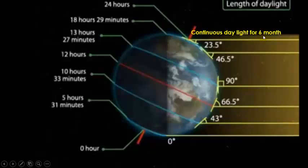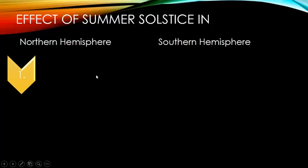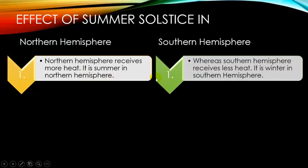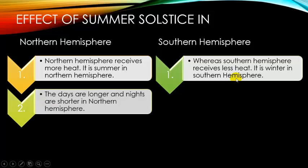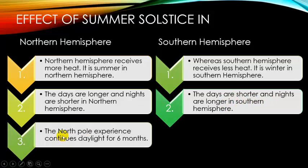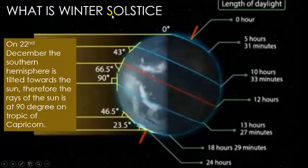Effects of summer solstice: The North Pole experiences continuous daylight for 6 months, while the South Pole experiences continuous night for 6 months. The Northern Hemisphere receives more heat, so it is summer in the Northern Hemisphere. The Southern Hemisphere receives less heat, so it is winter in the Southern Hemisphere. The days are longer and nights are shorter in the Northern Hemisphere, while days are shorter and nights are longer in the Southern Hemisphere.